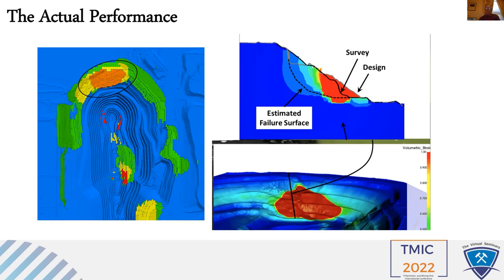What that meant for the business was significant - the gold price was increasing, the mine got back into production, the company was taken out of voluntary administration, all the creditors were paid 100 cents in the dollar, and the business continued. This company was literally saved from the ashes. People were astonished - they thought the administrator would bring in the receiver and take the oxy-acetylene torch to the mill, chop it up and sell it. But it continued on - it just shows the power of this type of analysis.